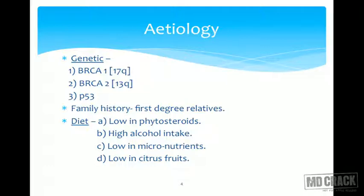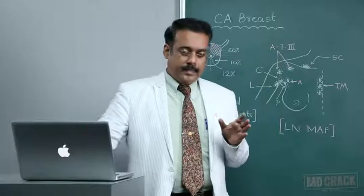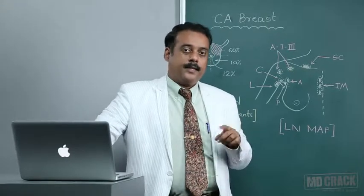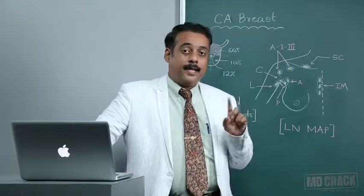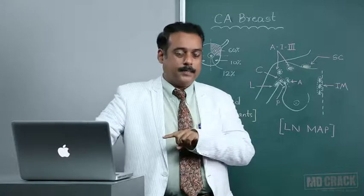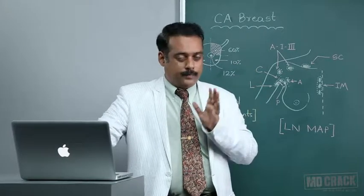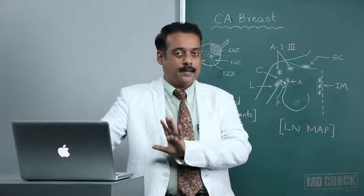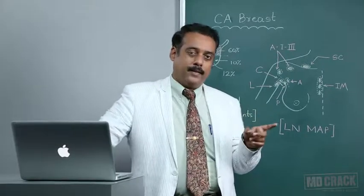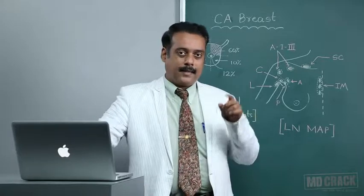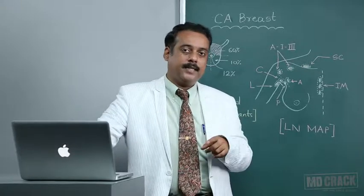Family history is the most important risk factor, especially in females. First-degree relatives being affected directly contributes to risk in other relatives. If a mother is suffering from CA breast, there is a chance the daughter will suffer. However, if a sister is suffering from CA breast, the relative risk increases much more in the other sibling — statistically, the risk among siblings is significantly higher.